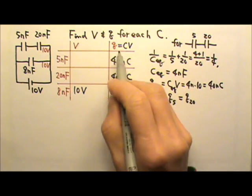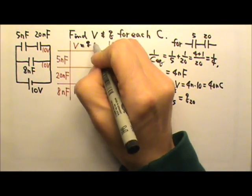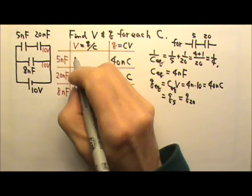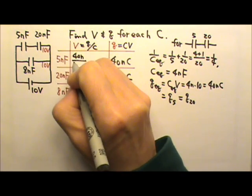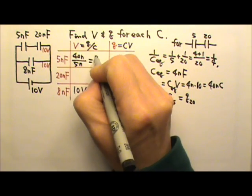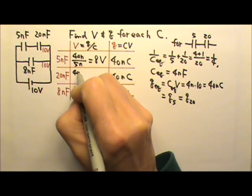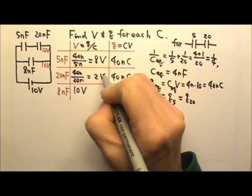And we can use the charge to find the voltage because the voltage is Q over C. So the voltage for this one is the charge 40 nano divided by the capacitance 5 nano. That's 8 volts. And this one is 40 nano divided by 20 nano. And that's 2 volts.